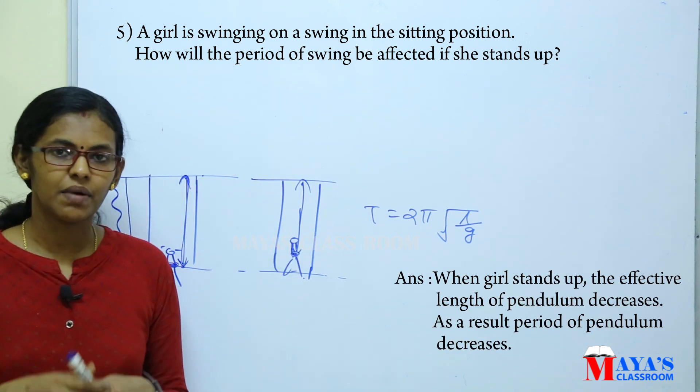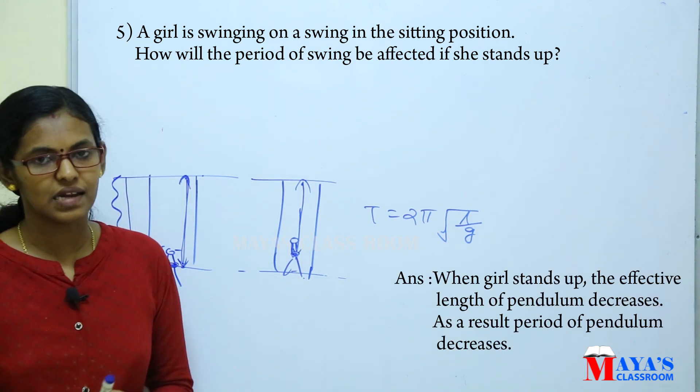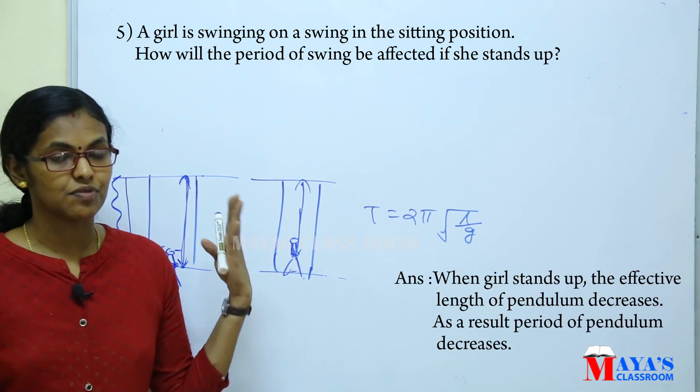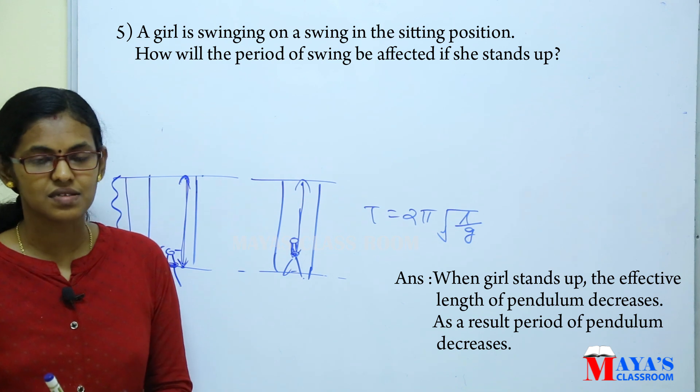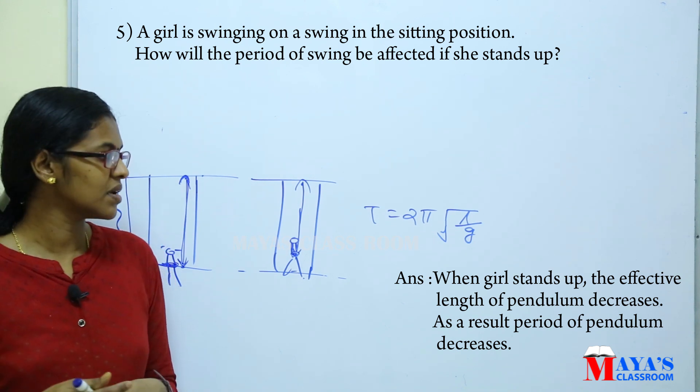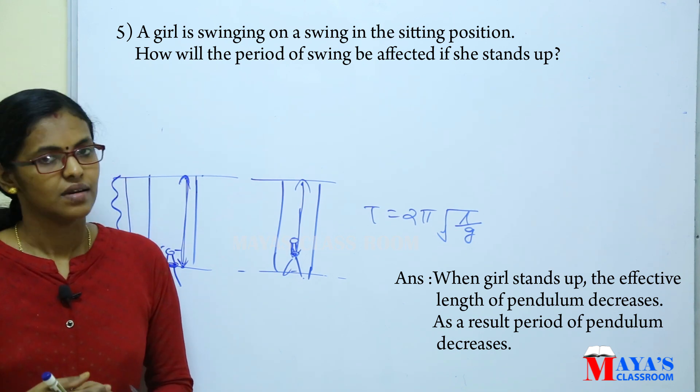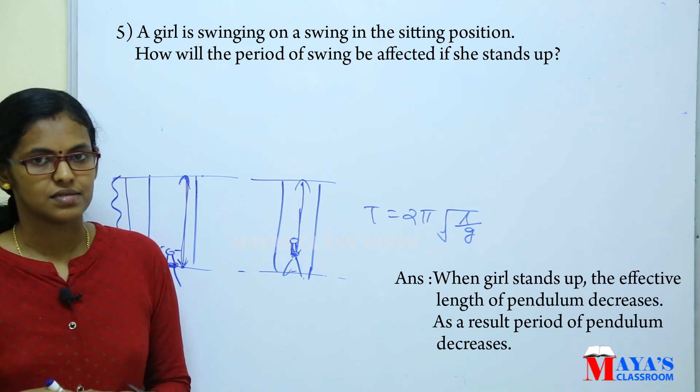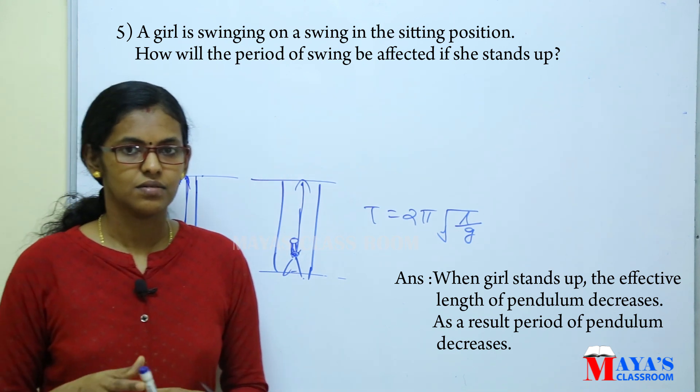When the girl stands up, the effective length of the pendulum decreases. So the length decreases and the time period also decreases.